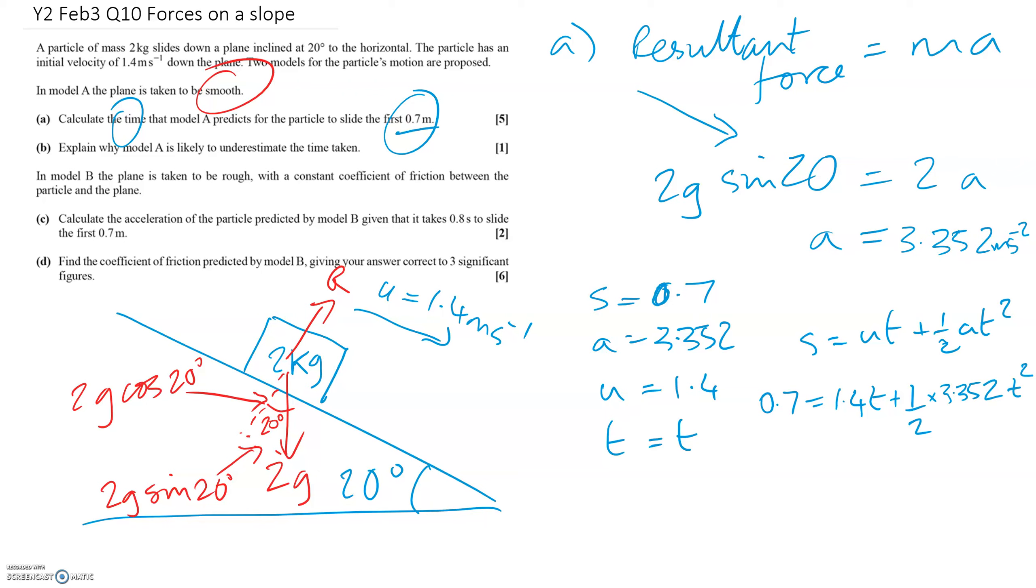So that's a quadratic. If we put that into our calculator, we'll get it to equal 0 first of all. Get everything on the left-hand side, make it equal 0. We'll get 1.676 T squared minus 1.4T.